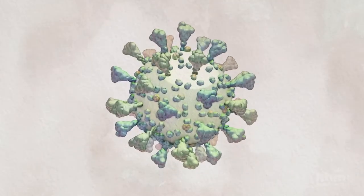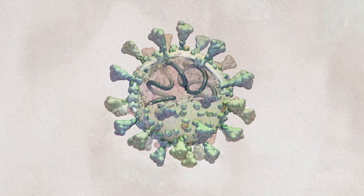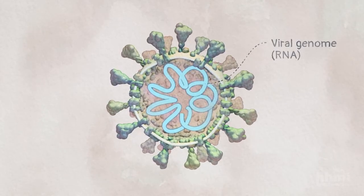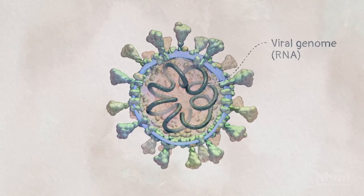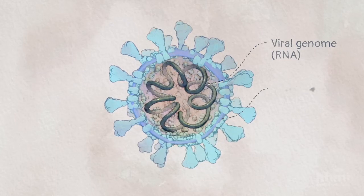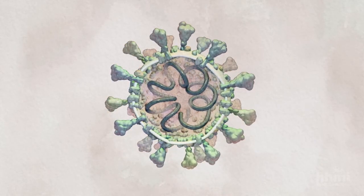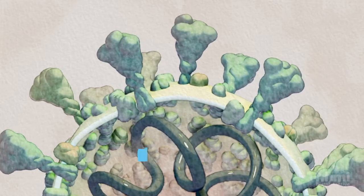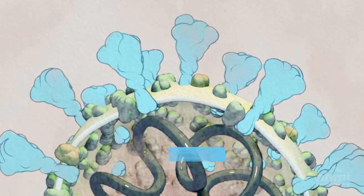All coronaviruses, including SARS-CoV-2, have a genome made of a single strand of RNA, which is surrounded by a membrane made of lipids and proteins. This membrane is called an envelope. Coronaviruses are named after what looks like a crown of protein spikes that stick out of their envelope.